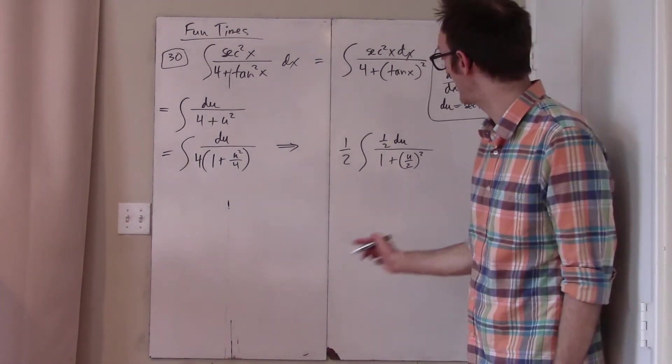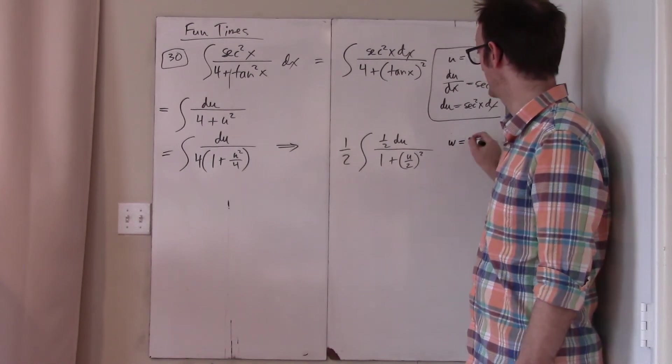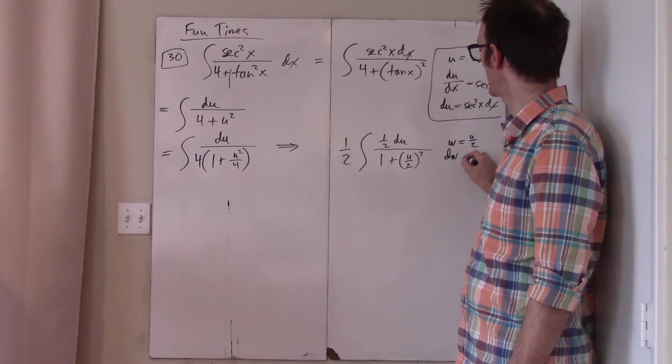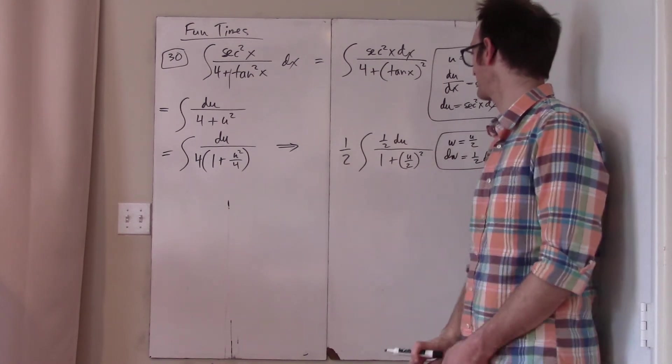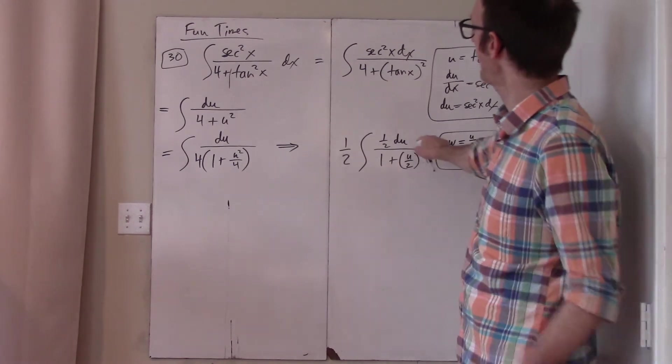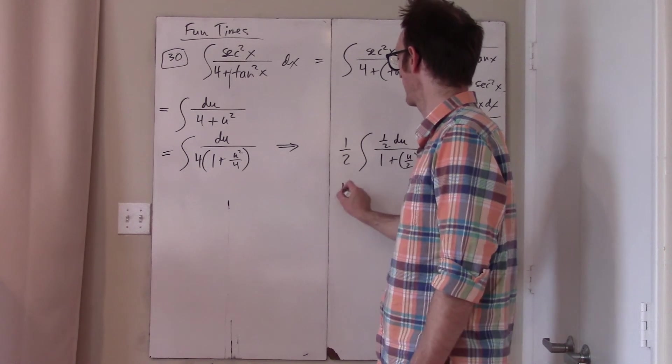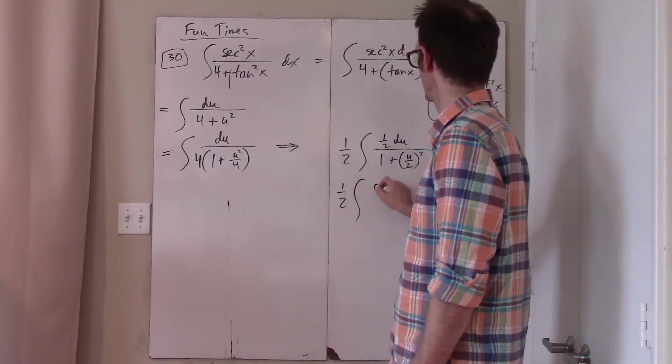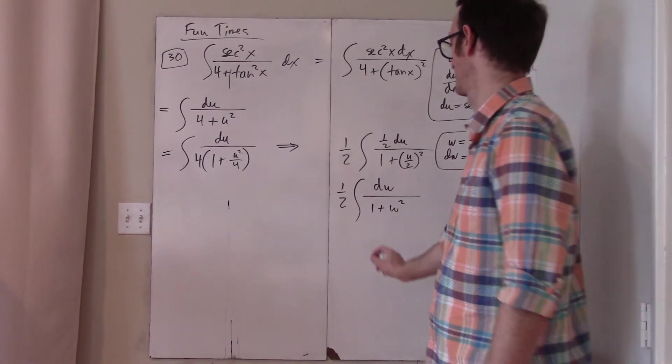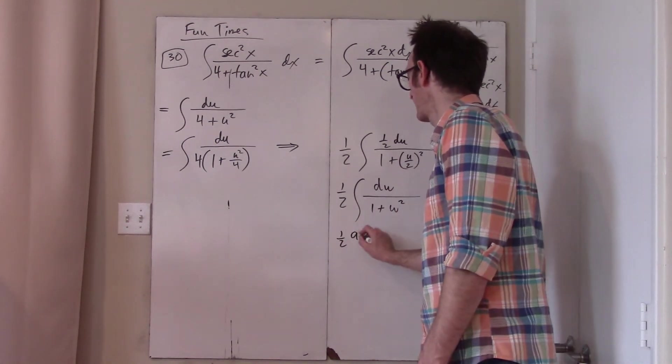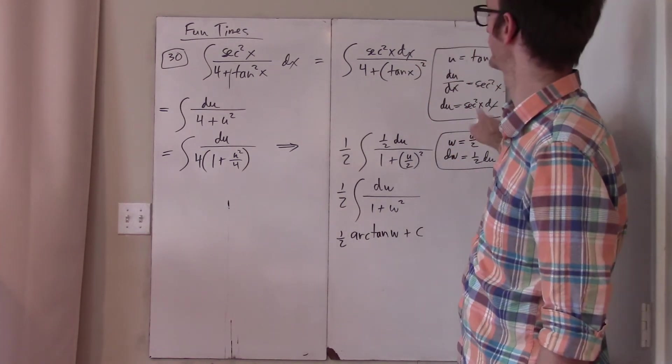This is because I'm just getting so good now at this, that I anticipate that w is going to be u over 2, that dw is therefore going to be 1 half du. Notice I'm even skipping a step there, so that I want that 1 half du up there as my dw. So this is 1 half dw over 1 plus w squared. That is just arctan. So this is 1 half arctan w plus c.